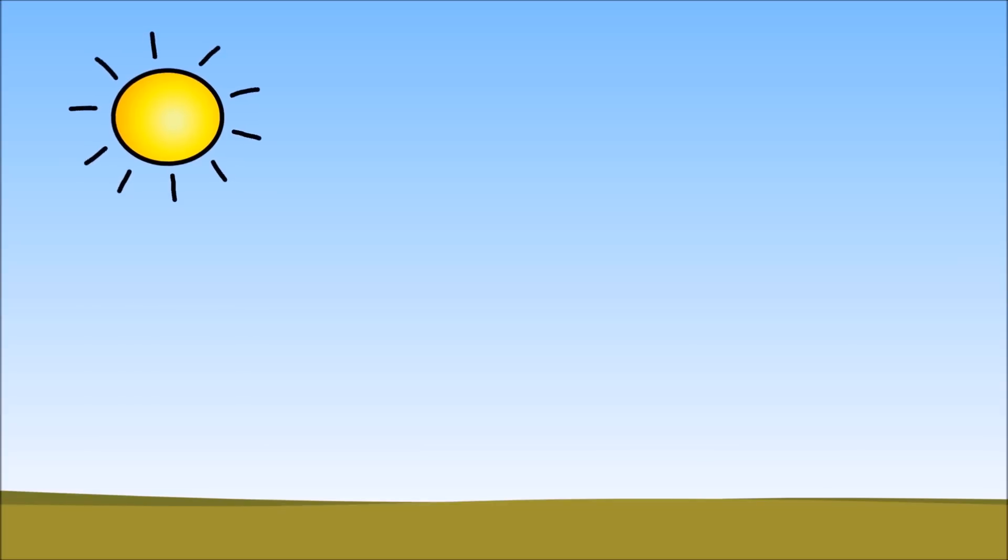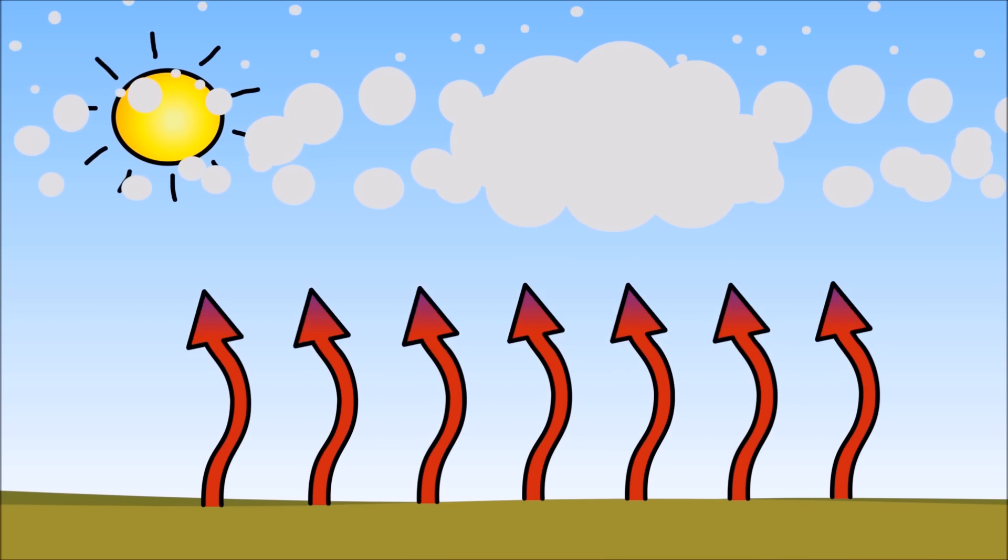When the sun is out, it warms up the surface of the earth. The warm, less heavy air rises and meets the cooler, heavier air above it. Condensation in the air builds up, creating clouds. As more heat moves upwards, the storm clouds grow bigger.